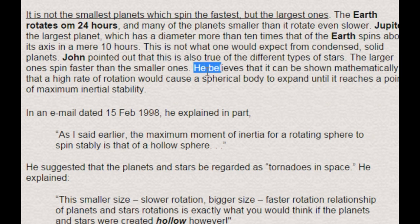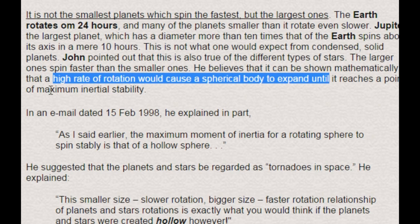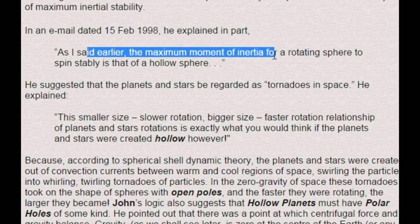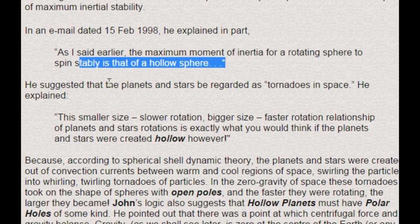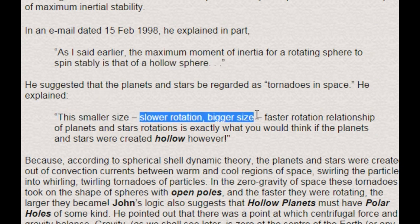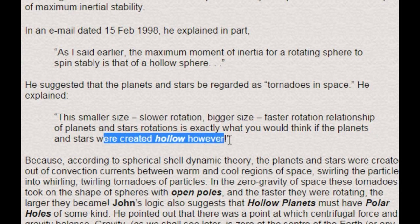John Flora believes it can be shown mathematically that a higher rate of rotation would cause a spherical body to expand until it reaches a point of maximal inertial stability. He explained: 'The maximum moment of inertia for a rotating sphere to spin stably is that of a hollow sphere.' He suggested planets and stars be regarded as tornadoes in space — the smaller size and slow rotation versus bigger size and faster rotation relationship is exactly what you would expect if planets and stars were created hollow.